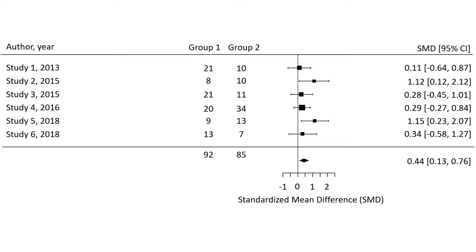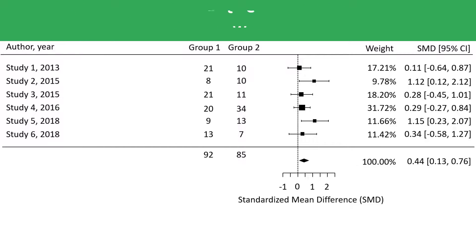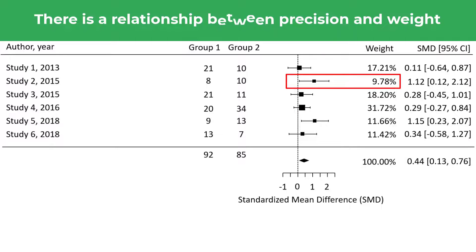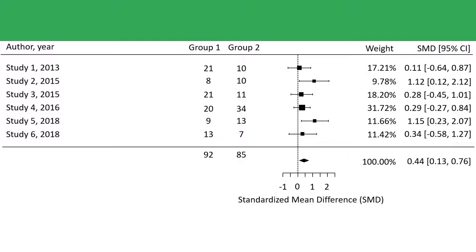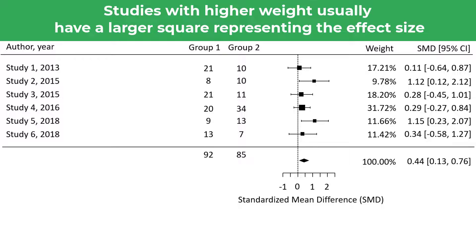Most of the time you will see a column known as weight. This is a percentage value that indicates how much influence the individual study has on the overall effect. There is a relationship between a study's weight and precision, so those with relatively good precision — such as study 4 — are assigned more weight compared with those with relatively poor precision, such as study 2. And since precision is largely driven by sample size, studies with higher weights generally have a higher sample size. This links back to seeing different size squares in the plot — those studies with larger weights have a larger square.